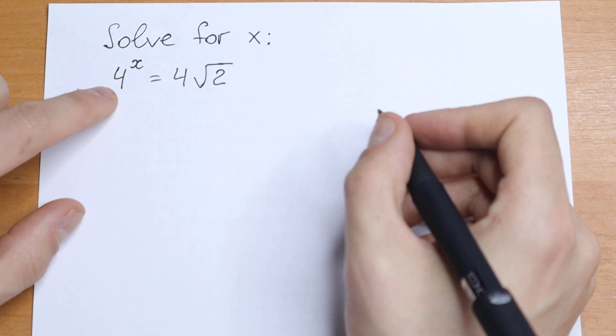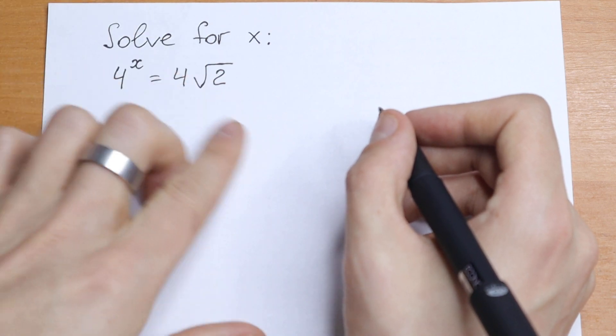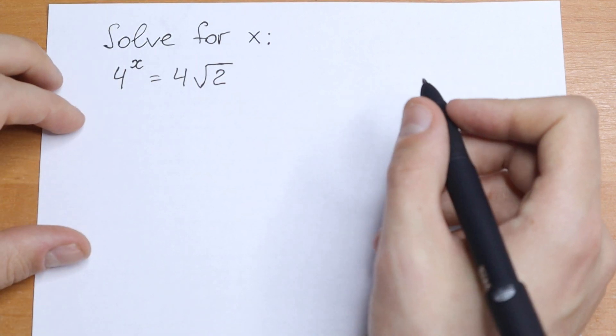This 4 can be written as 2 squared, this 4 as 2 squared as well, and this 2 as 2 to the power 1 half. So we can work with base of 2, and take a look what will happen.